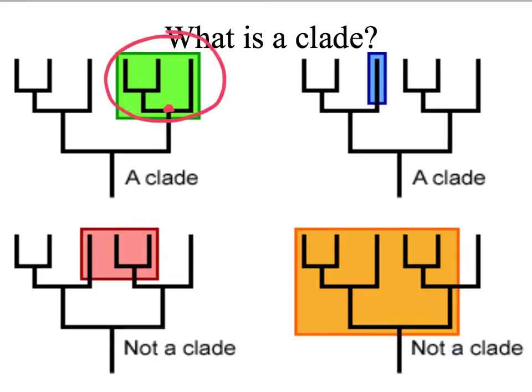Likewise, on this one, it is referring to all of its descendants. In the bottom one, this is not a clade because it is referring to two different groups and the middle part is highlighted from the two different groups, which is not a clade.